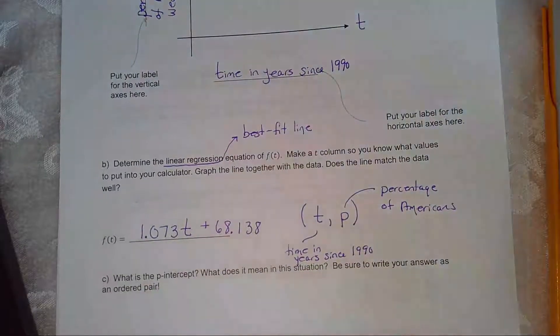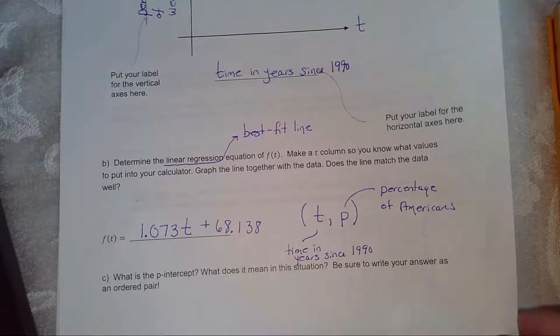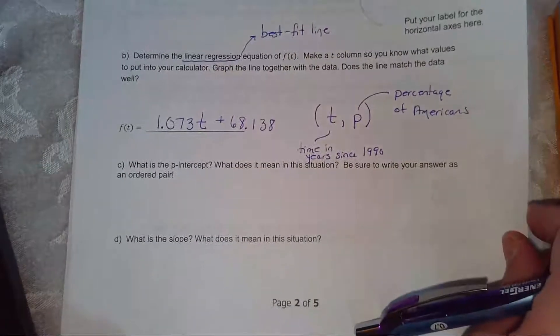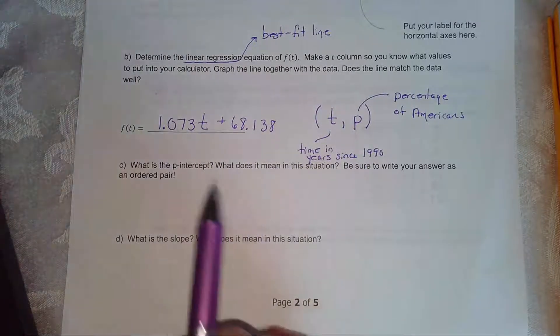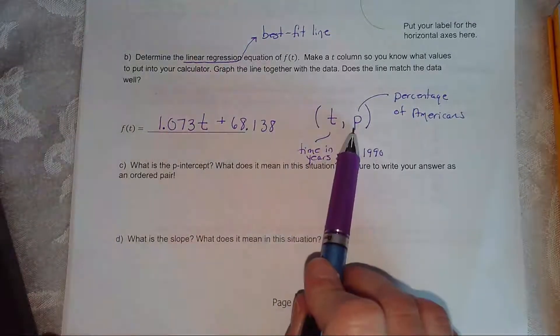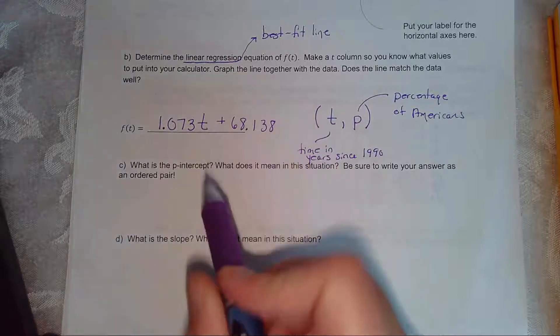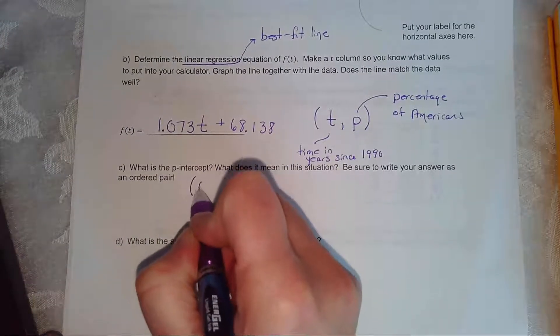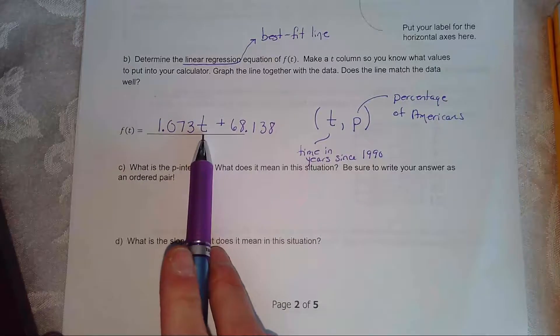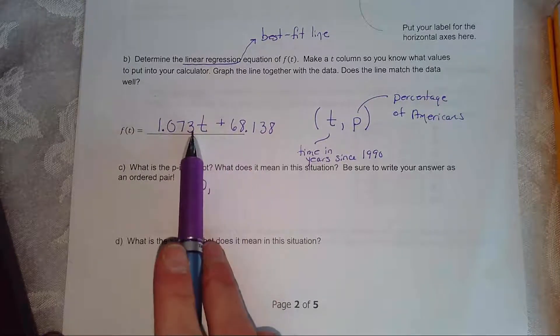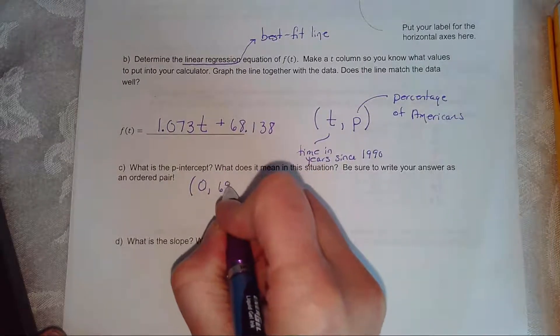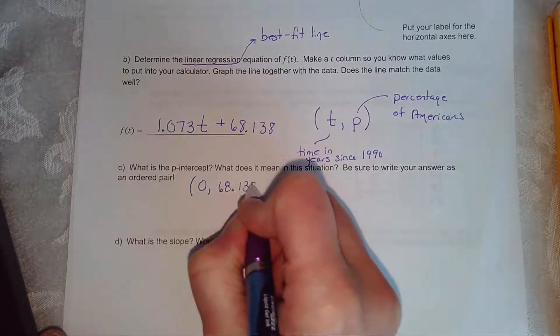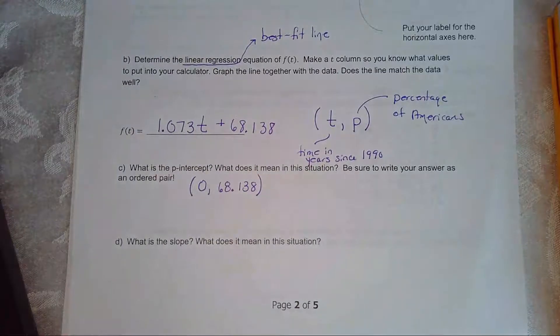Now, they're going to ask you to find things. And when they ask you to interpret them in terms of the problem, you have to tell me what each piece means. So first of all, they said, what's the p-intercept? So the p-intercept means you have a p, but t is zero. So if t is zero, then that goes away. And then you have 68.138. That's the value on your y-intercept. It's the starting value.